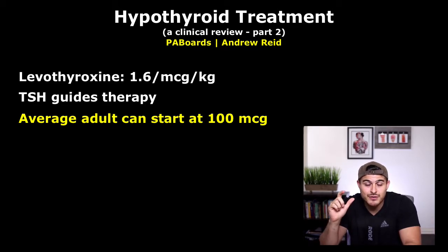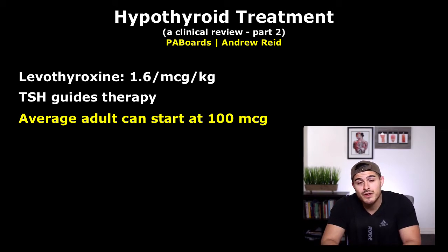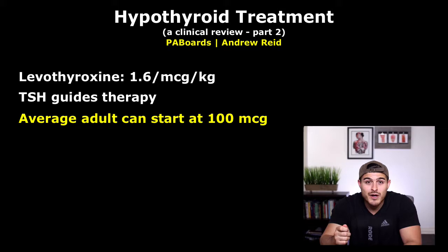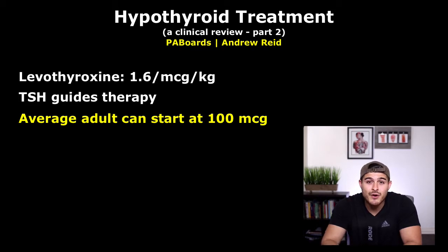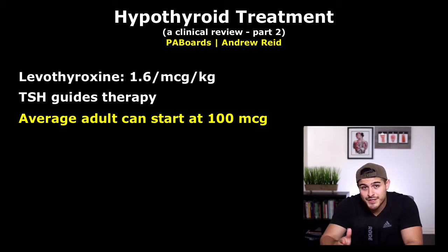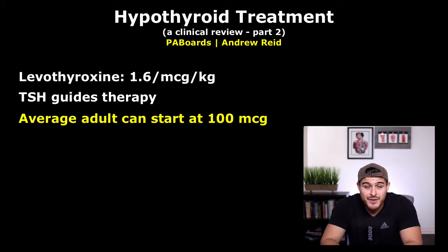Older patients should be started at a lower dose — around 50 micrograms — to reduce complications, particularly cardiac ones, since levothyroxine increases cardiac demand. Patients with coronary heart disease should be started at an even lower dose of 25 micrograms, then titrated slowly. To summarize: average adult 100 mcg, older adult 50 mcg, older adult with coronary disease 25 mcg.